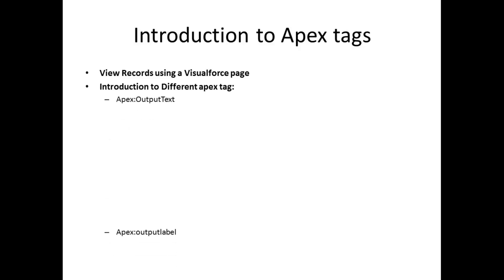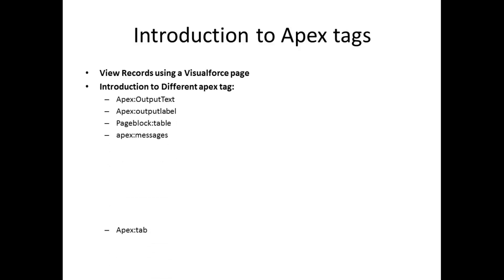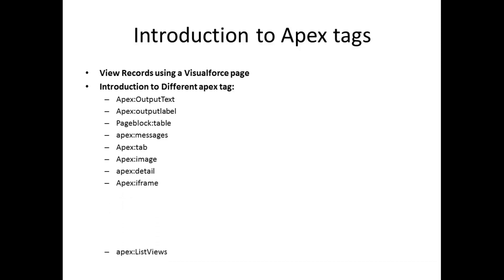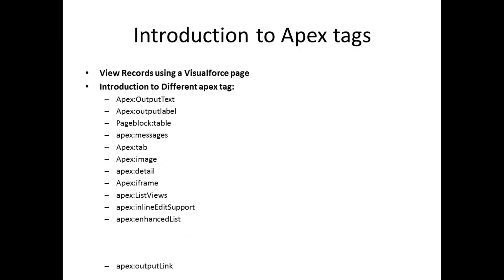This session covers an introduction to different Apex Tags, including: Apex Output Text, Apex Output Label, Apex Page Block Table, Apex Message, Apex Tab, Apex Image, Apex Detail, Apex Iframe, Apex List View, Apex Inline Support, Apex Enhance List, and Apex Output Link. We are going to discuss these tags, which are very important.